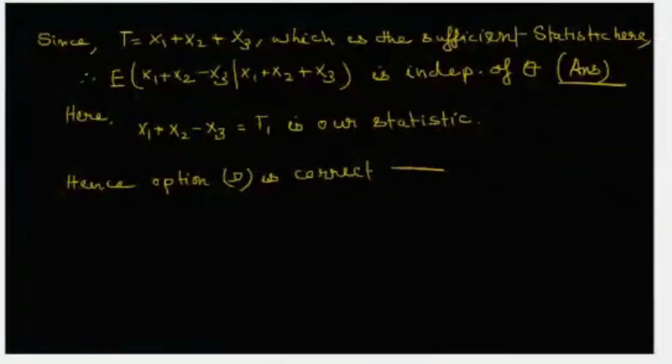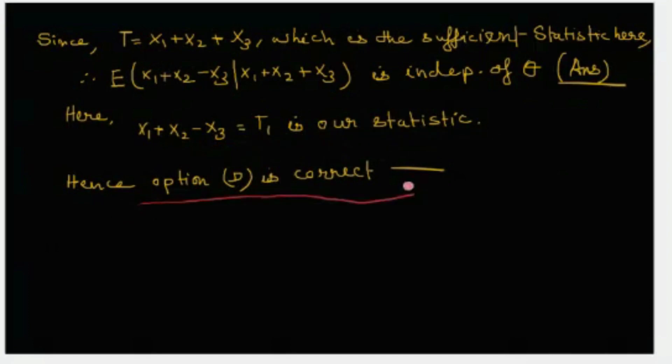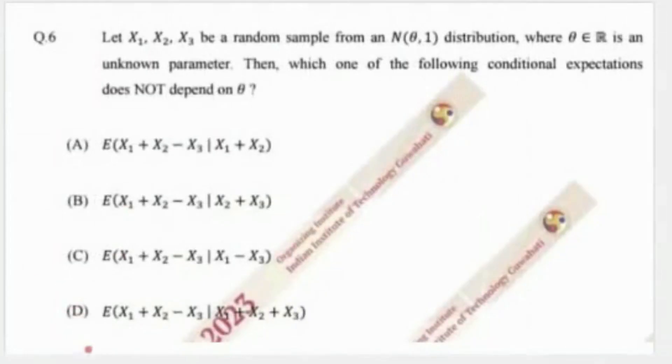Now in this case we have T equals x1 plus x2 plus x3 which is the sufficient statistic. Hence expectation of (x1 plus x2 minus x3) given (x1 plus x2 plus x3) is independent of θ. Here x1 plus x2 minus x3 is acting as T1, any other statistic. Hence option D is correct in this question. Our option D is independent of the parameter, hence it does not depend on θ. Option D is correct.